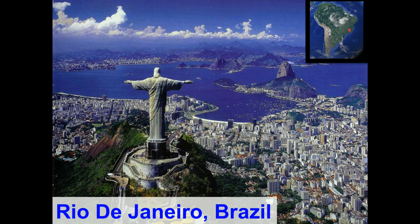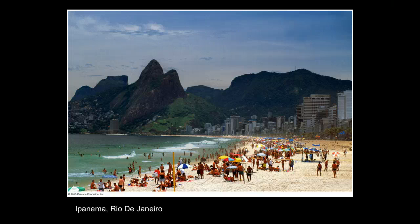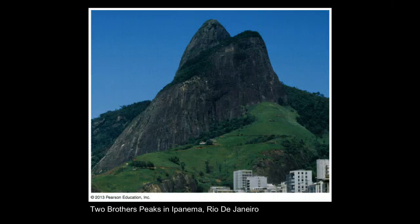To illustrate these concepts, we're going to use the example of a suburb or area of Rio de Janeiro, Brazil, one of the bigger urban areas in the world. Looking specifically at human geography and cultural features, you can see the characteristics of people — the populations, densities, and built-up landscape along the coast. The physical side includes natural features like Two Brothers Peak in Ipanema, Rio de Janeiro, a naturally occurring feature in the landscape visible in the background of the previous picture.